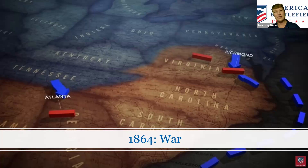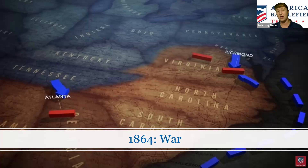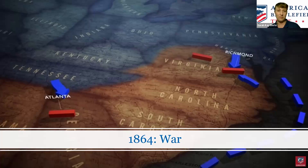In 1862, battles begin to become larger in scale — the Battle of Shiloh in Tennessee, fights around Richmond, Virginia. The bloodiest single day in American history is the Battle of Antietam, fought in September 1862. It's that battle that gave President Lincoln the opportunity to promise freedom through the Emancipation Proclamation to enslaved people in states still in rebellion, if those states had not returned to the Union by January 1st, 1863. The war did not end, and Lincoln signed the Emancipation Proclamation.